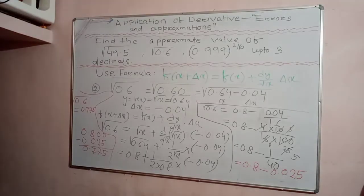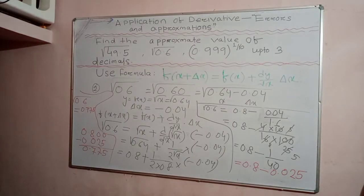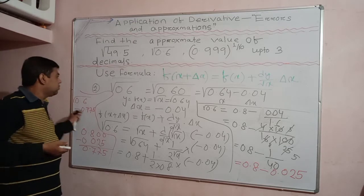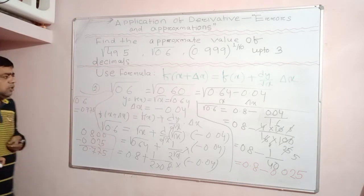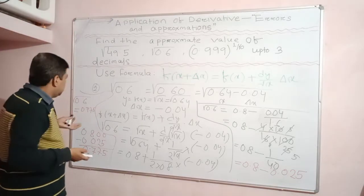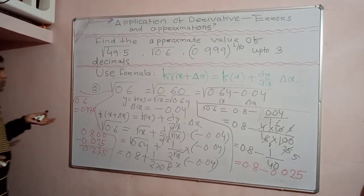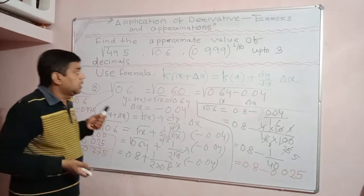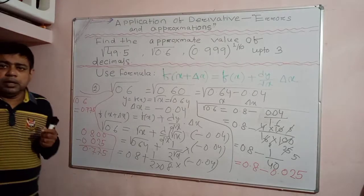So the value of √0.6 is 0.775. This is an interesting result — you can find the square root of any number using this formula. This is how numerical expressions can be simplified more easily using the concept of error and approximation from derivatives.